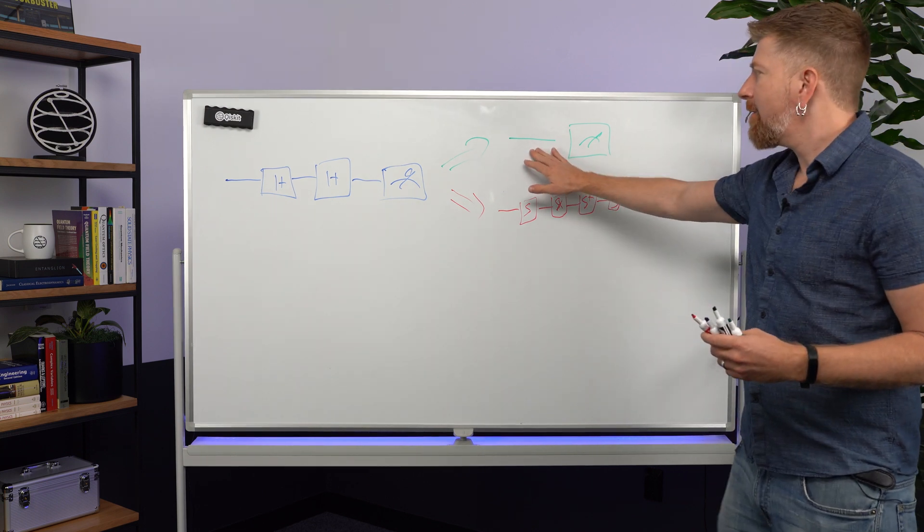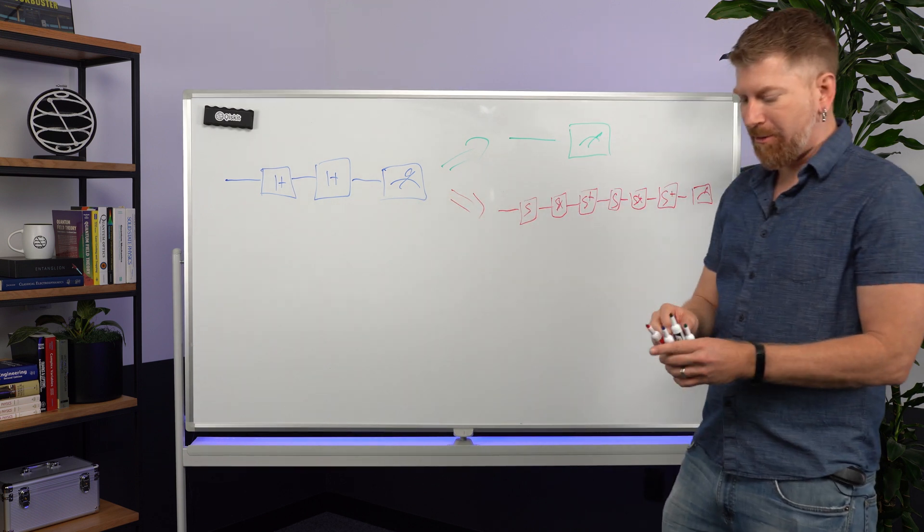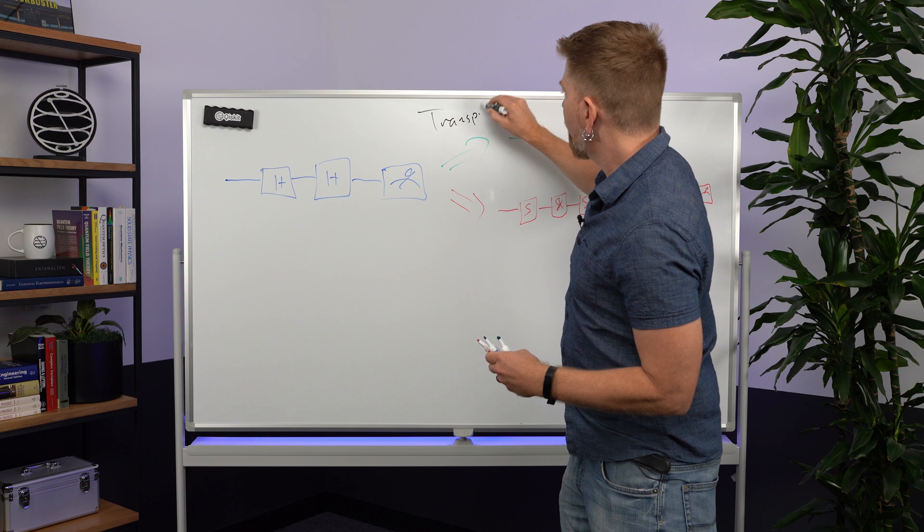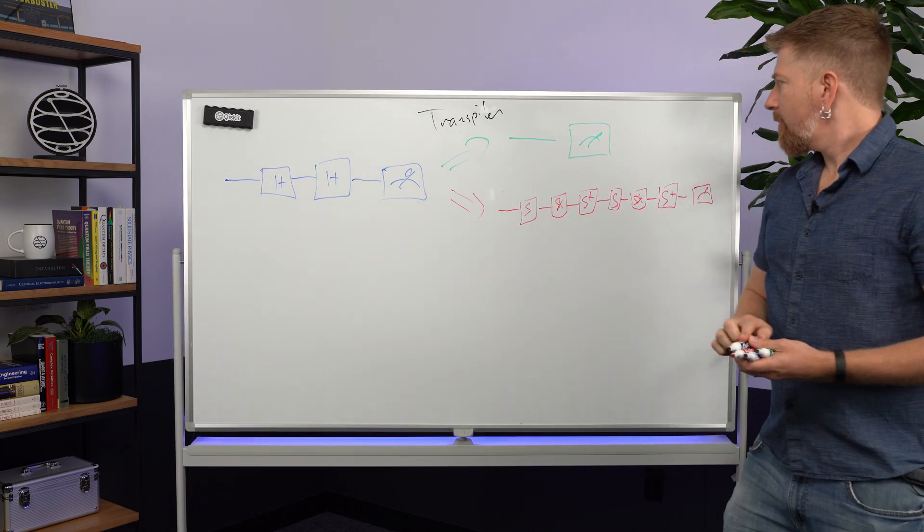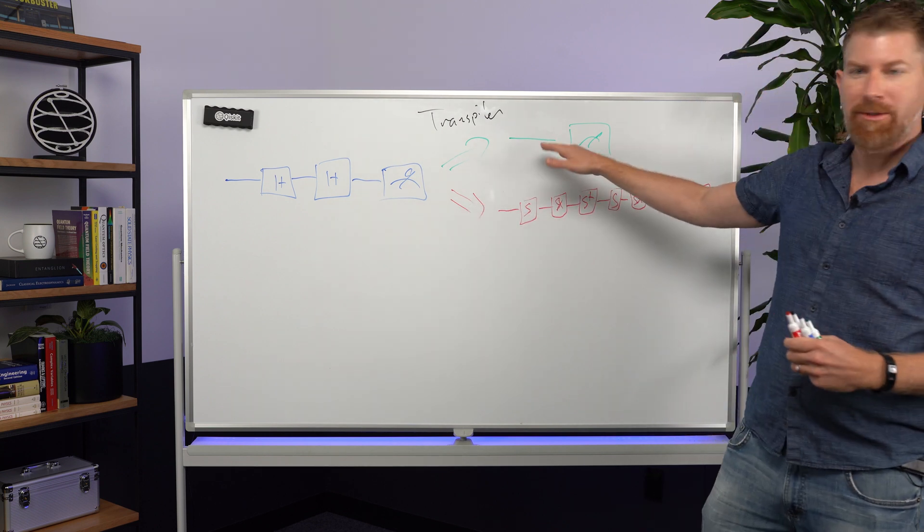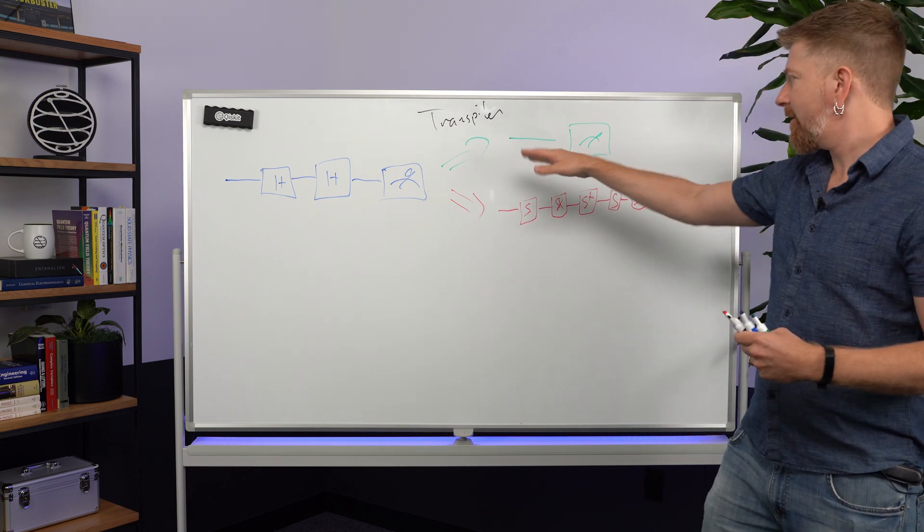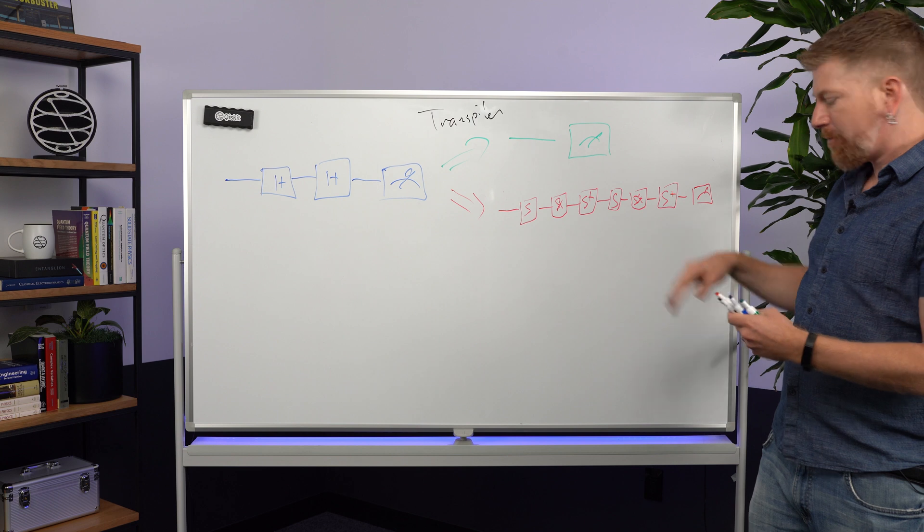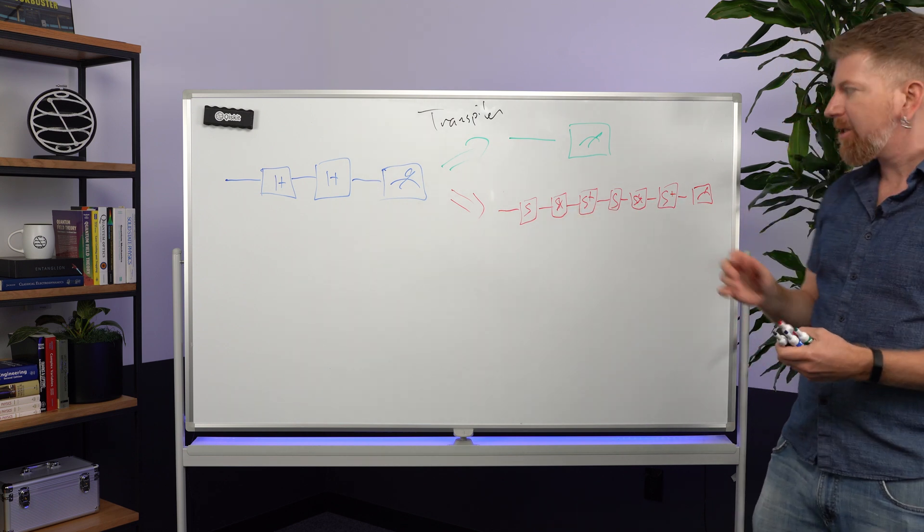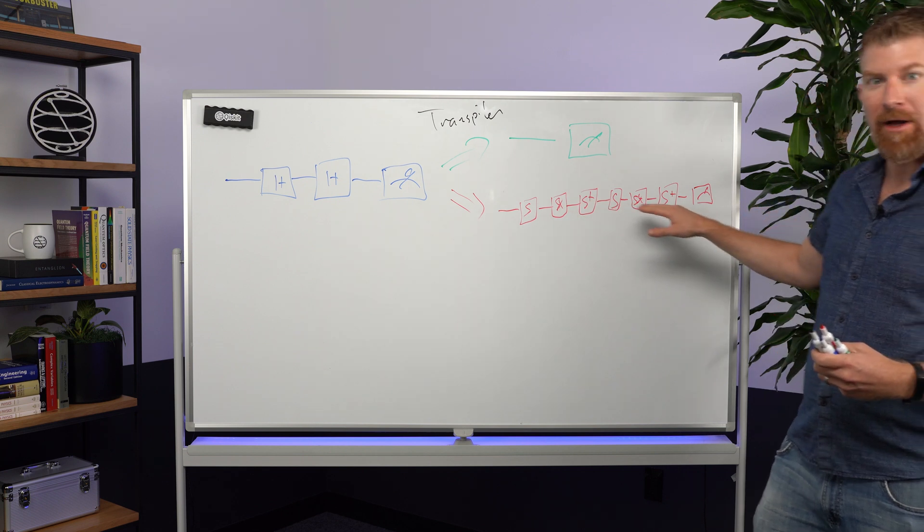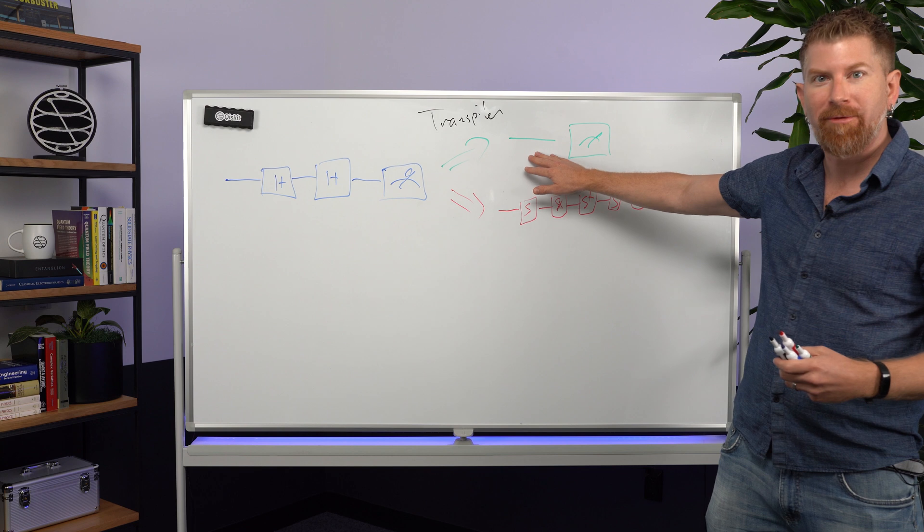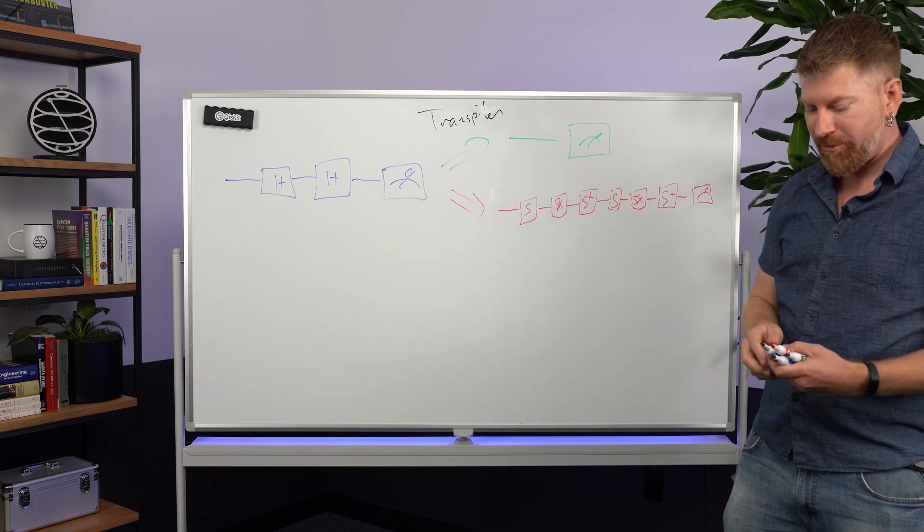So in this case, we're doing nothing because the transpiler knows, and maybe I should write that right there, transpiler. Because the transpiler is smart enough to know that two Hadamards in a row equals the identity. And so you just get the same result. In this case, it transpiles it into a series of microwave pulses that you actually execute. Now there's a big difference because this one's going to involve actual interactions with the hardware and there's always going to be errors introduced. Whereas this one involves no interactions. You're just going to measure whatever your input state is.